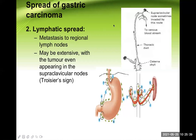Metastasis to the regional lymph nodes is quite common, and sometimes metastasis can occur to quite distant lymph nodes, like the left supraclavicular lymph node — we call this Troisier's sign. The cancer cells go to the cisterna chyli, then through the thoracic duct upward, involving the left supraclavicular lymph node. The name of that lymph node is Virchow's lymph node, but this particular sign is known as Troisier's sign.